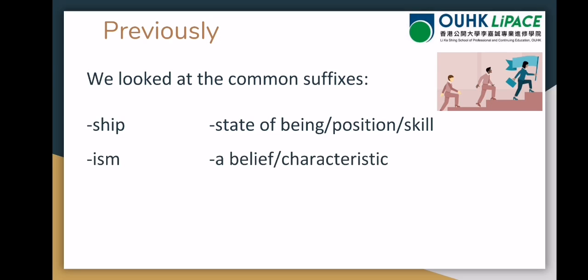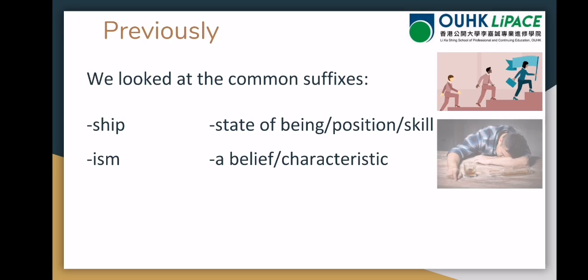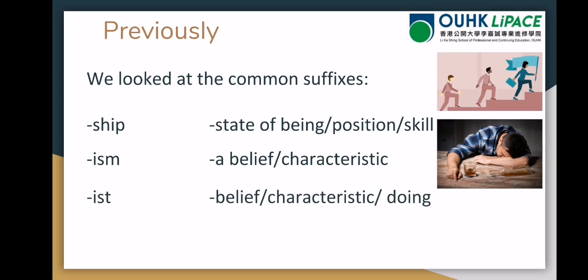Next we had words that end in '-ism' (I-S-M). These are normally a belief or some sort of descriptive characteristic. You can think of 'Buddhism' or 'Taoism' as religious beliefs, or 'communism' as a political belief. As a characteristic, a word like 'alcoholism' describes someone who drinks too much.